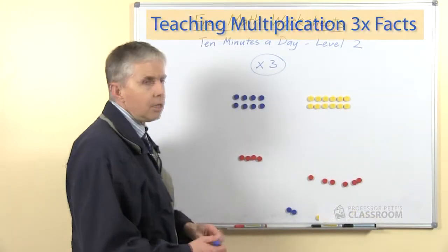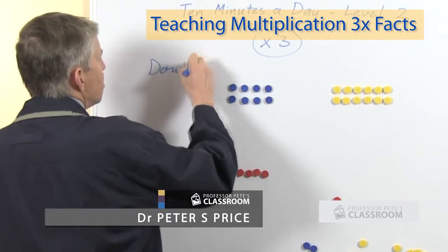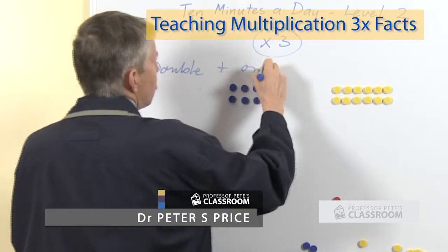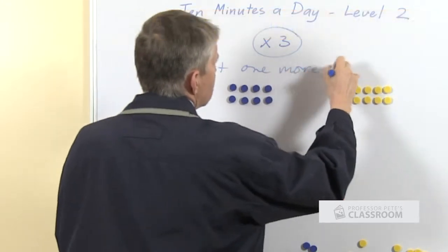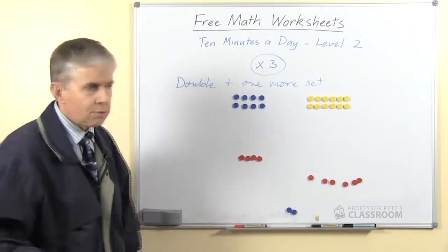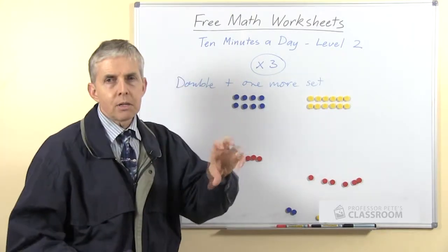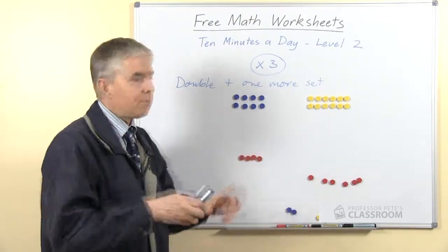Multiplying by 3 uses a strategy that we call double plus one more set. We don't want to get it confused with doubles plus one, which of course is an addition strategy, but the idea of having double a number and then add one more of that number.